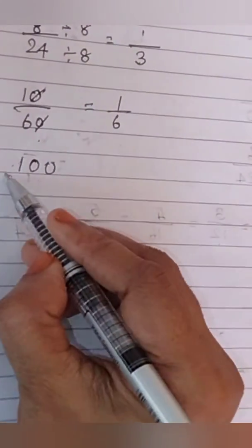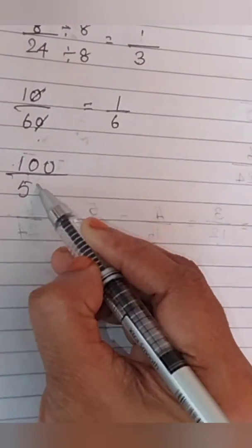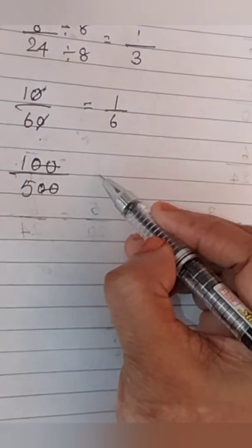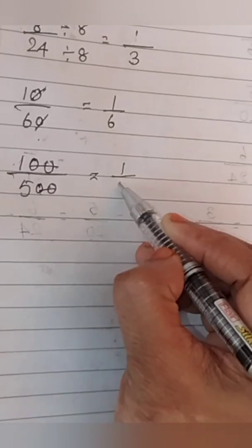Next question, 100 by 500. So, here we can cancel two 0s in the numerator and denominator. The answer will be 1 by 5.